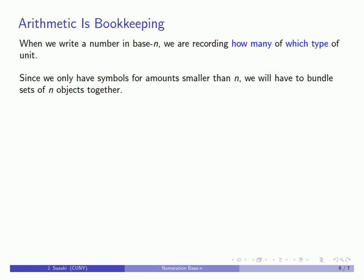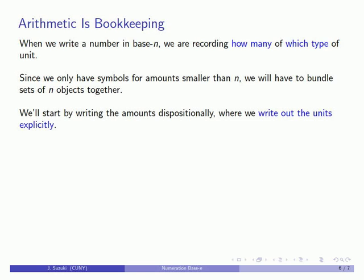And in this case when we write a number what we're recording is how many of which type of unit. Now because we only have symbols for amounts smaller than n we have to whenever we have a set of n objects we have to bundle them together and now they're treated as a single object and we do have a symbol for one of something.